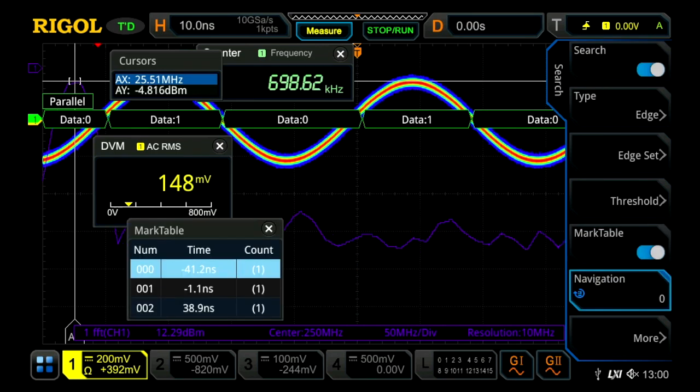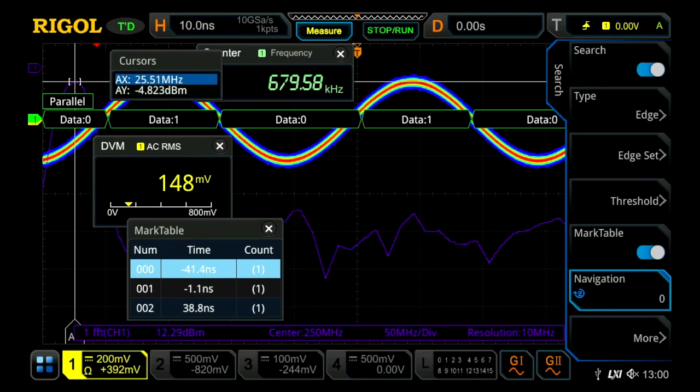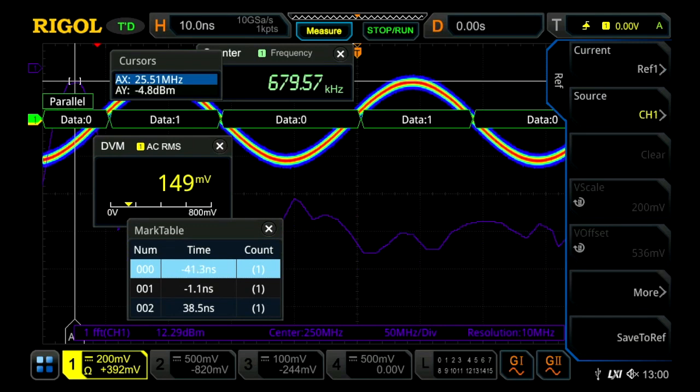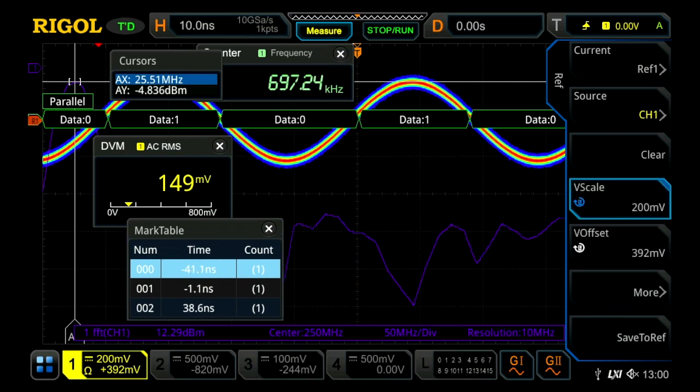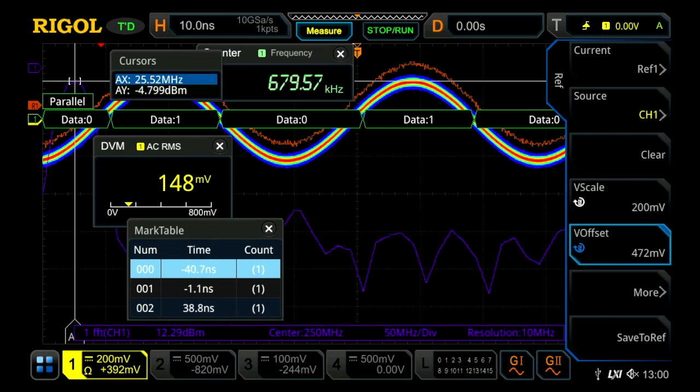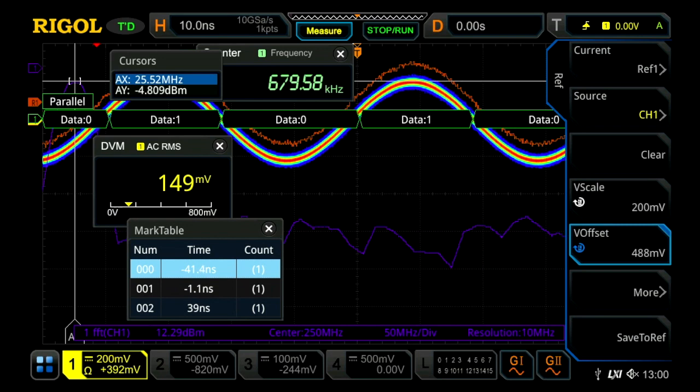And now let's look at search and mark capabilities. So looking for peaks and edges within our single memory sweep. We can create reference waveforms. We can also add a table of measurements as well.